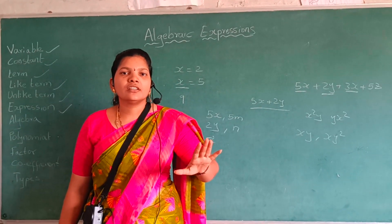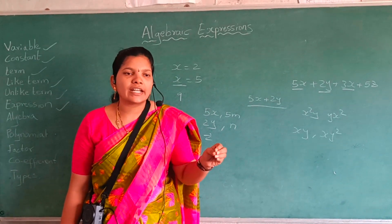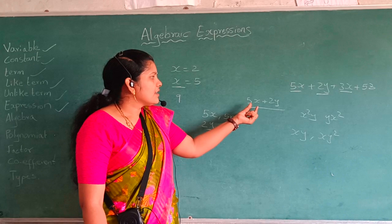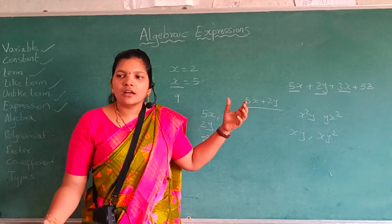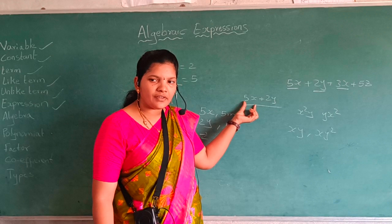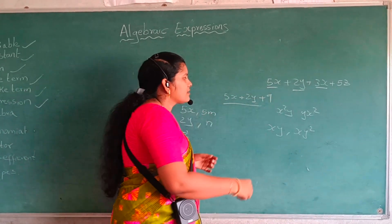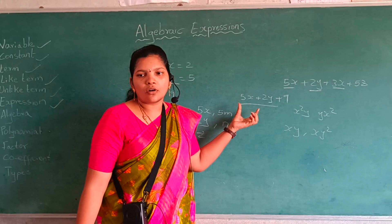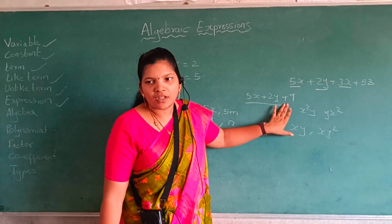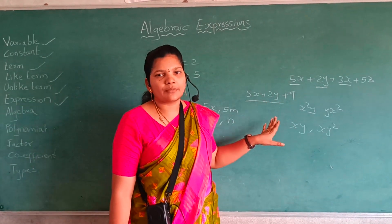And what is algebra? An expression which contains both variables and constants is called an algebra expression. For example, 5x is a variable, 2y is a variable, and 9 is a constant. So 5x plus 2y plus 9 — the combination of variables and constants — is called algebra.